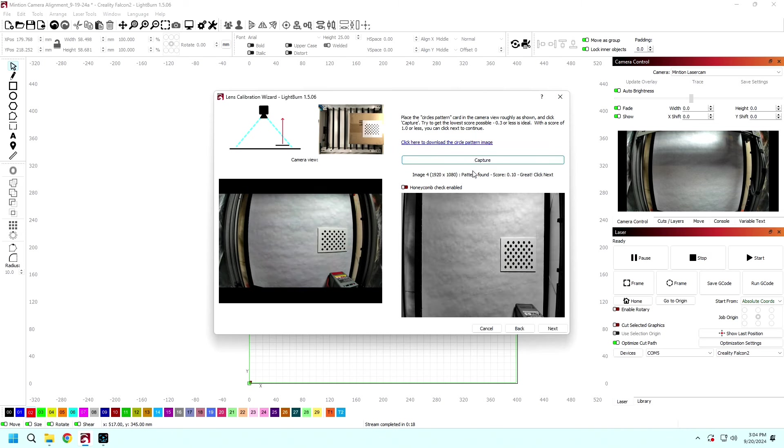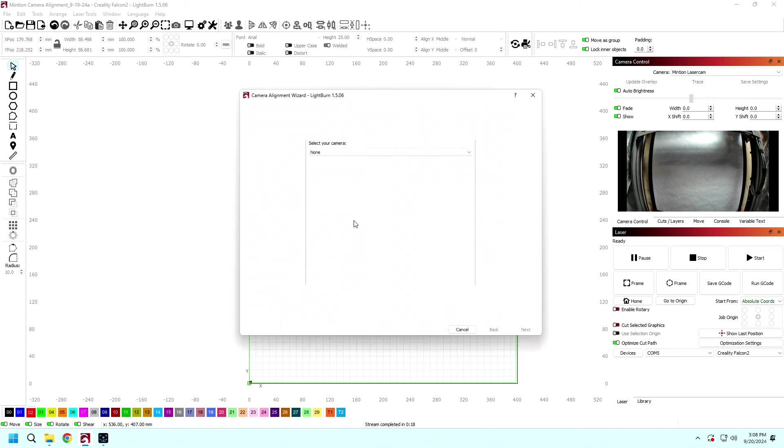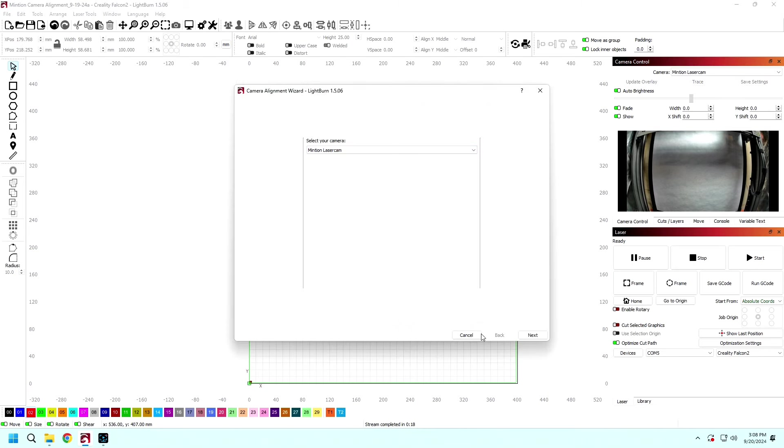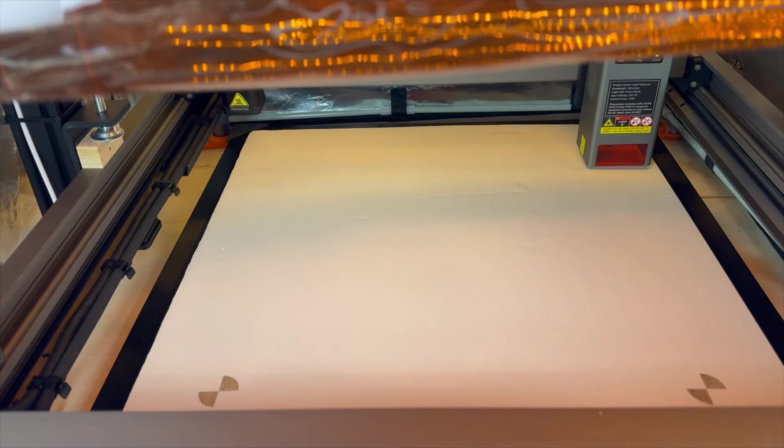First, home the laser. Then click on the Camera Control and then Calibrate Camera Alignment. Click Camera is over Work Area. Choose Minchian Laser Cam. I entered 0.1 millimeter material thickness and 6,000 millimeters per minute speed and 60% power. Click Start and the four targets will be engraved on the paper.